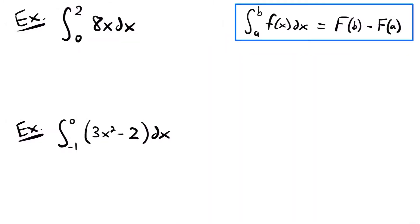Welcome back. So the first part of the fundamental theorem of calculus says that if we have a definite integral from a to b of some function times dx, that's going to be equal to the antiderivative capital F of that function evaluated at the upper bound b minus the antiderivative evaluated at the lower bound a of our definite integral.